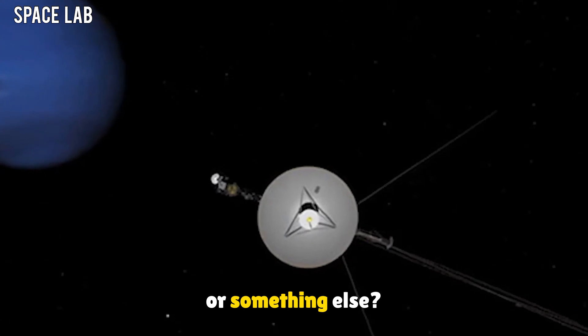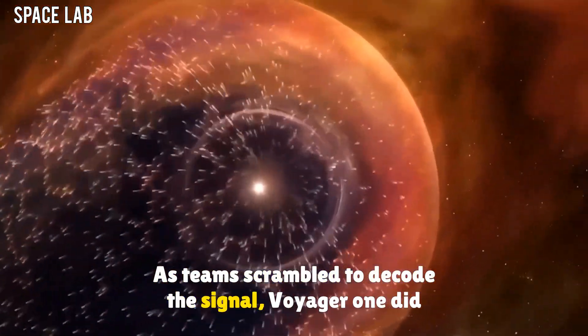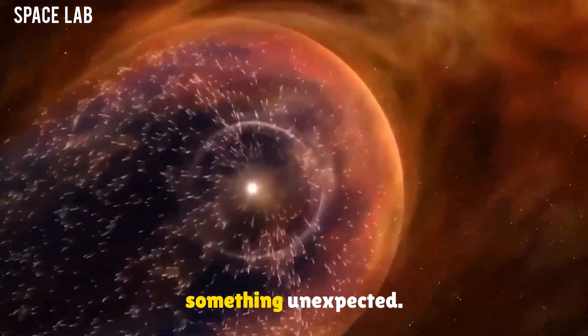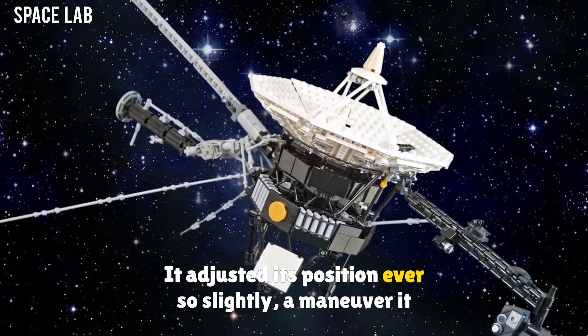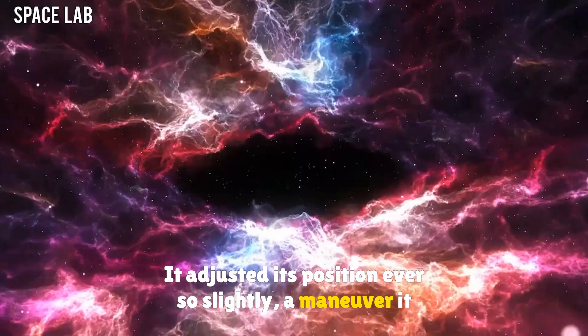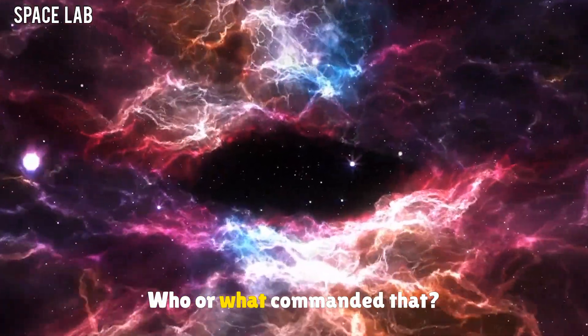As teams scrambled to decode the signal, Voyager 1 did something unexpected. It adjusted its position ever so slightly. A maneuver it hasn't made in years. Who or what commanded that?